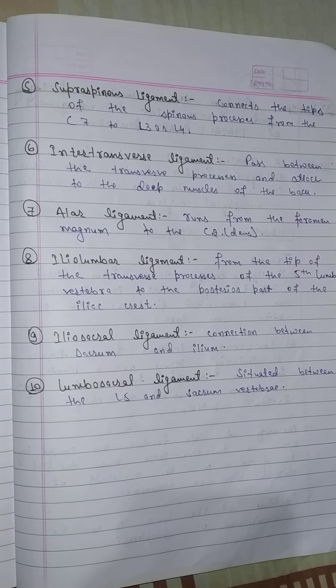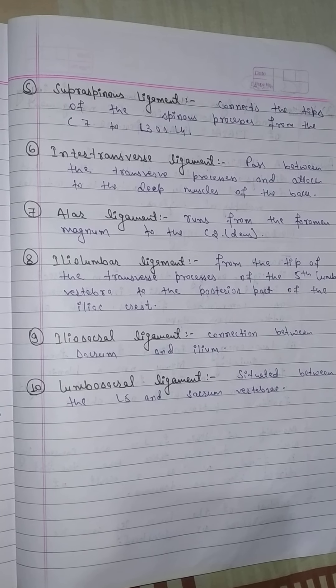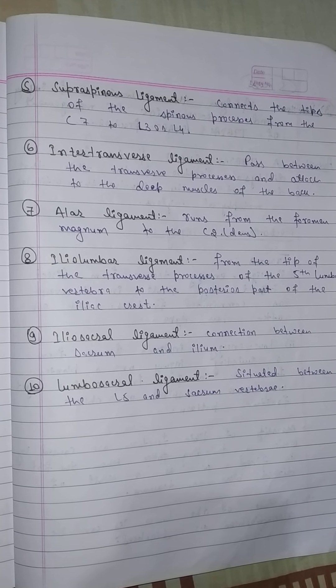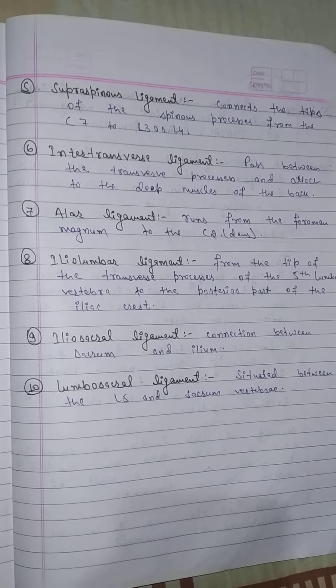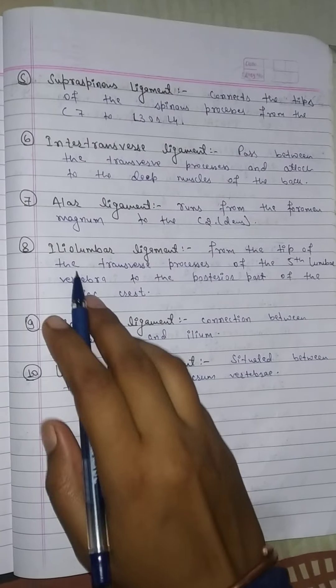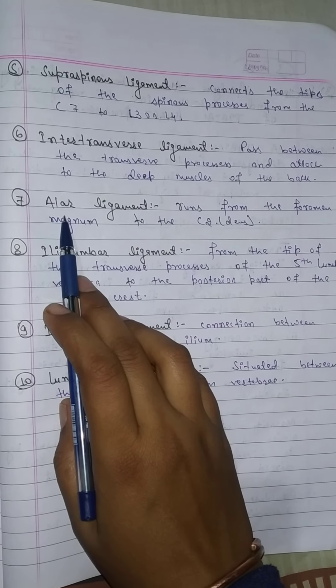The Intertransverse Ligament passes between the transverse processes and is attached to the deep muscles of the back.